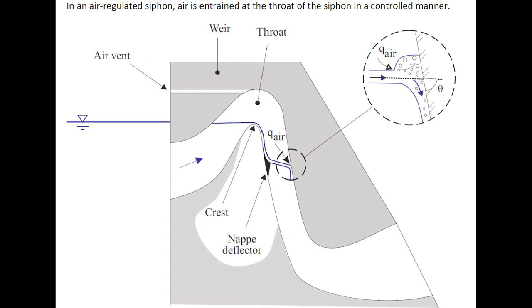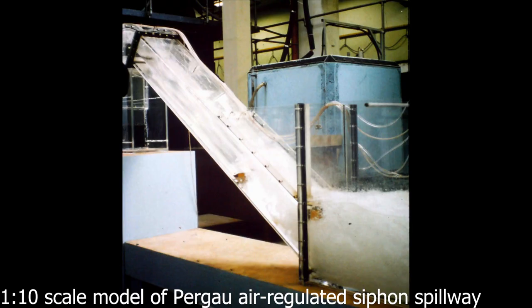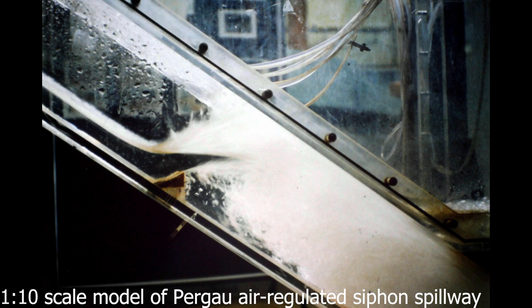In an air-regulated siphon, air is entrained at the throat of the siphon in a controlled manner. This photograph shows a 1-in-10 scale model of the PERGO air-regulated siphon spillway, with a second photograph illustrating a detail of the deflector.